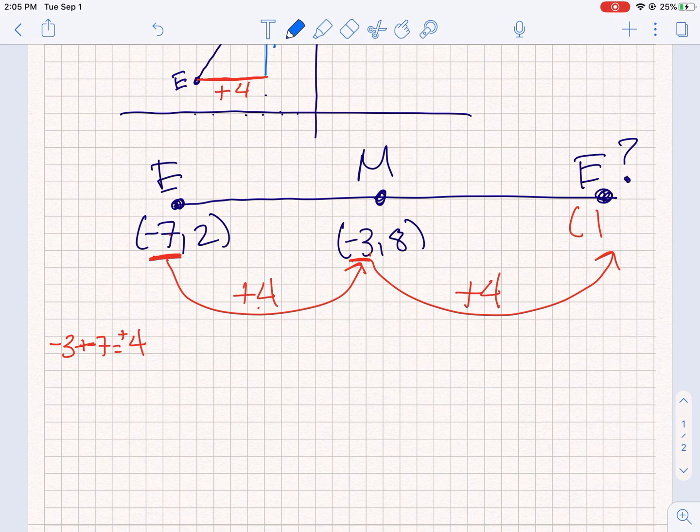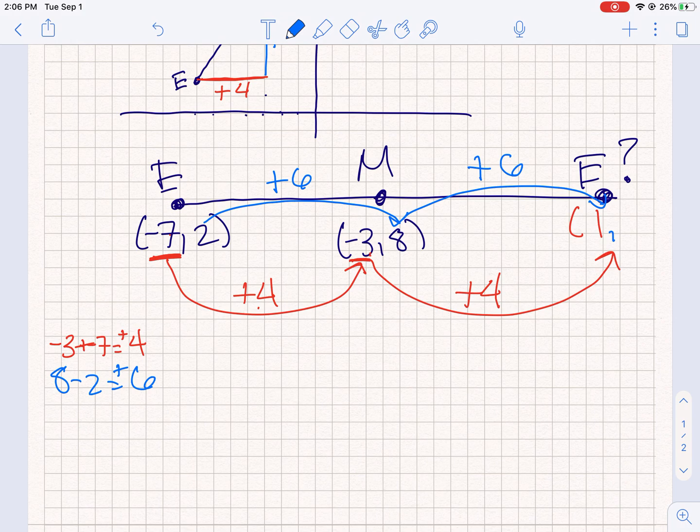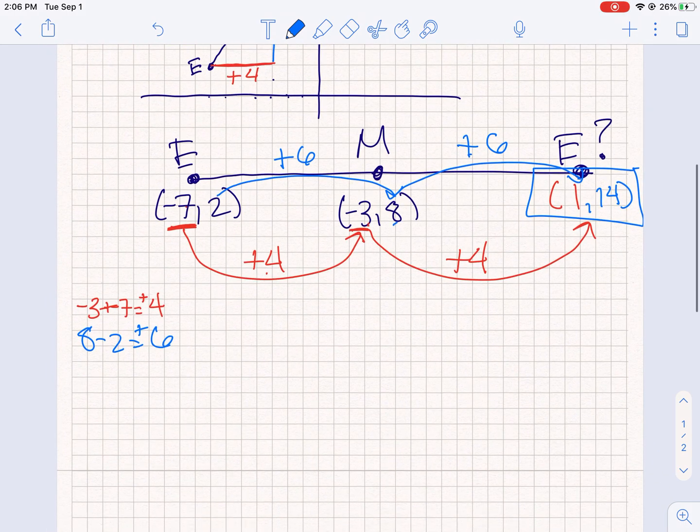Now we do the same thing for the y's. How do I get from 2 to 8? Well I add 6. And again, you could do 8 minus 2 and that gives me positive 6. So now, to get over here, I need to add 6 as well. So 8 plus 6 gives me 14. So that is why the coordinates are (1, 14).